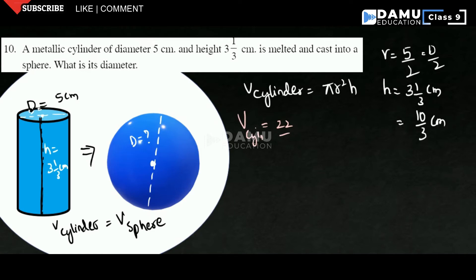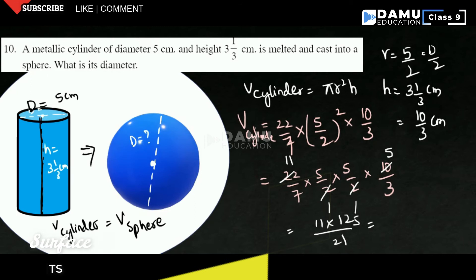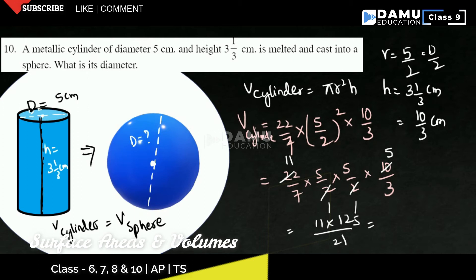Let us substitute. Volume of cylinder will be equal to 22/7 into r squared, which is 5/2 whole square, into 10/3. So that is 22/7 into 5/2 into 5/2 into 10/3. Let us cancel these values: 2 ones, 2 elevens, 2 ones, 2 fives. What we are getting here is 11 into 5 into 5 — that is 11 into 125 which is 1375 by 21.